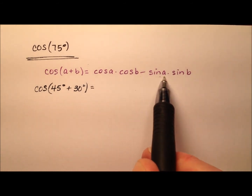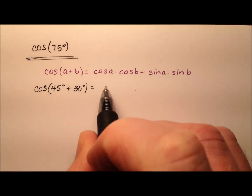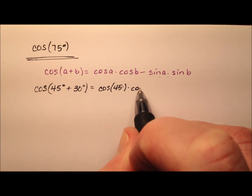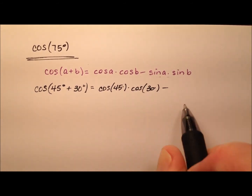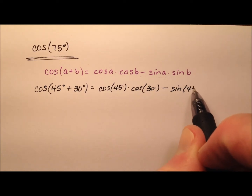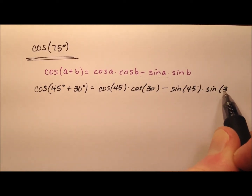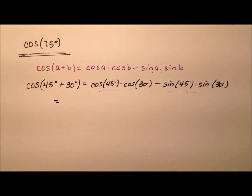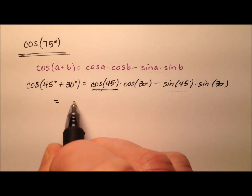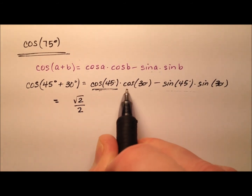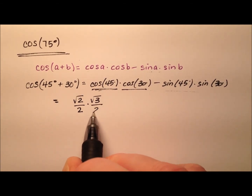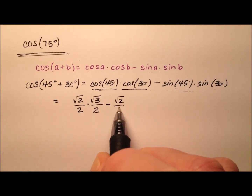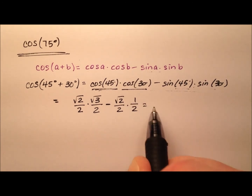Let's go ahead and use this expansion for the sum identity for cosine. So we'll be doing the cosine of 45 degrees times the cosine of 30 degrees, and we're going to subtract from that the sine of 45 degrees times the sine of 30 degrees. So now it's just time to get some values and simplify this expression. The cosine of 45 will be the square root of 2 over 2, and the cosine of 30 will be the square root of 3 over 2. And from that we subtract: the sine of 45, which is the square root of 2 over 2, and the sine of 30, which is 1 half.